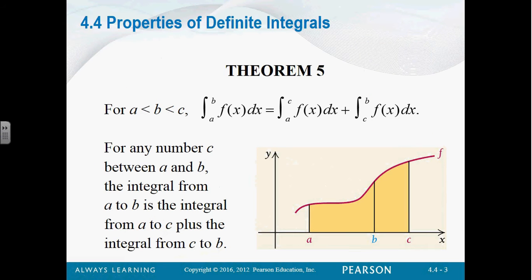Theorem five. Say you've got three numbers a, b, and c, where b is between a and c. For any number c that is between a and b, the integral from a to b is the integral from a to c plus the integral from c to b.